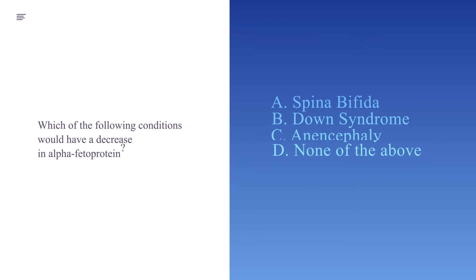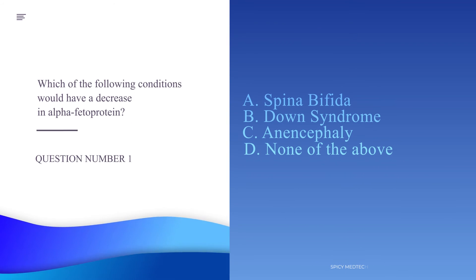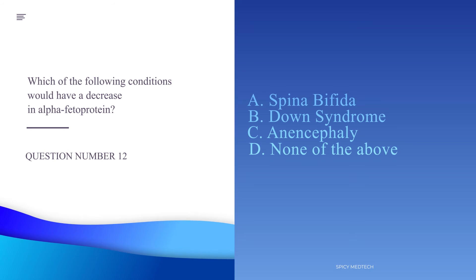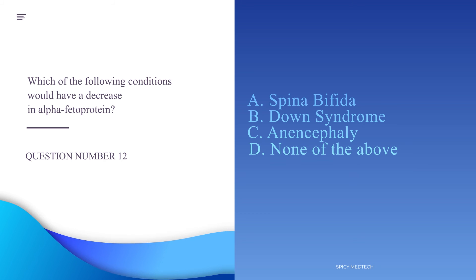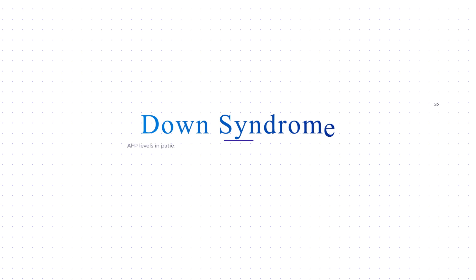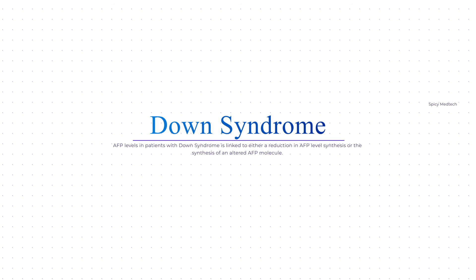Number twelve: Which of the following conditions would have a decrease in alpha-fetoprotein? A. Spina bifida, B. Down syndrome, C. Anencephaly, or D. None of the above. The answer is letter B, Down syndrome. Alpha-fetoprotein is increased in neural tube conditions, while in Down syndrome it is decreased, which can be due to reduction in the level of alpha-fetoprotein synthesis or the production of an altered alpha-fetoprotein molecule.